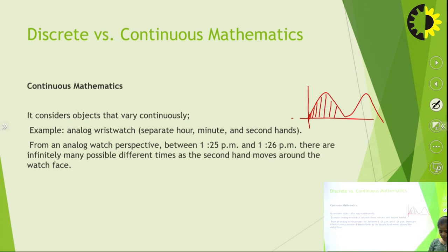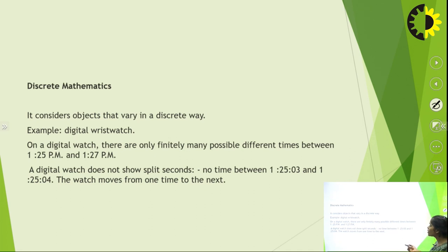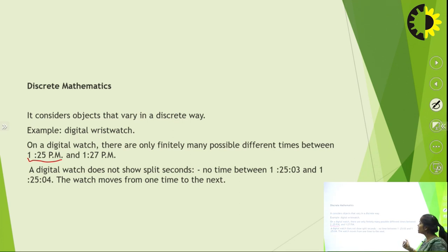Now come to discrete mathematics. In discrete mathematics, objects vary with discrete values only. For example, in a digital wrist watch, if I want to calculate the timing between 1:25 and 1:27, I do not have timings in between like 1:25.03 seconds. The digital watch moves directly from 1:25 to 1:27. These types of examples come under discrete mathematics.